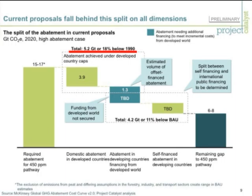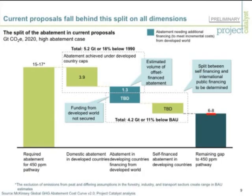We have also made an estimate of how much the various offset limits that are under discussion would contribute — and obviously in some countries this is not yet determined — but we have come to a rough estimate that out of these 5.2 gigatons, around 1.3 is likely to be done via offsetting, could be a bit more, and 3.9 would be domestic reductions. If we look at the developing world, we see that the overall announced actions add up to 4.2 gigatons below BAU, or 11 percent below BAU. We have not yet been able to determine which part will be self-financed and which part will be financed with public finance, but it gives us an order of magnitude of what is available from developing countries, which leaves a gap of 6 to 8 gigatons to the 450 ppm pathway.